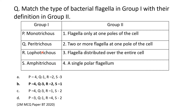In case of peritrichous, flagella is present all over the bacterial cell, so Q matches with 'flagella distributed over the entire cell' — Q matches with three. Then, R is lophotrichous. Lophotrichous means a number of flagella but at the single pole, so R matches with two — 'two or more flagella at one pole of the cell'.